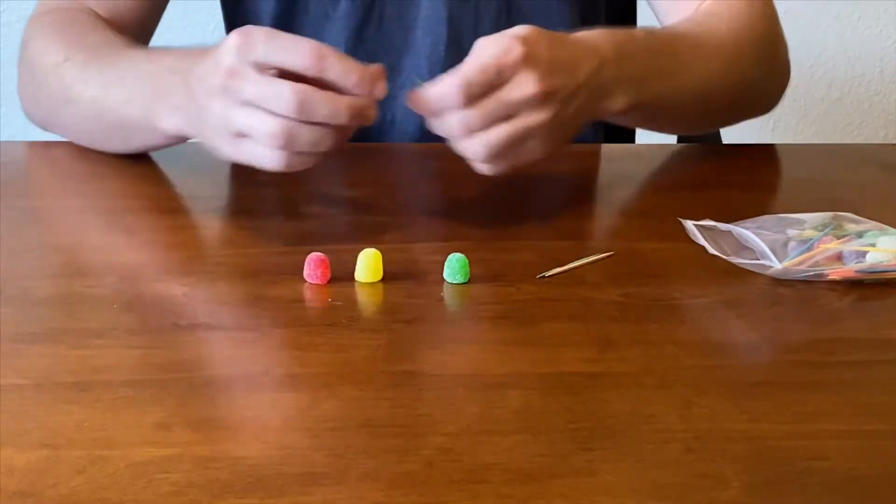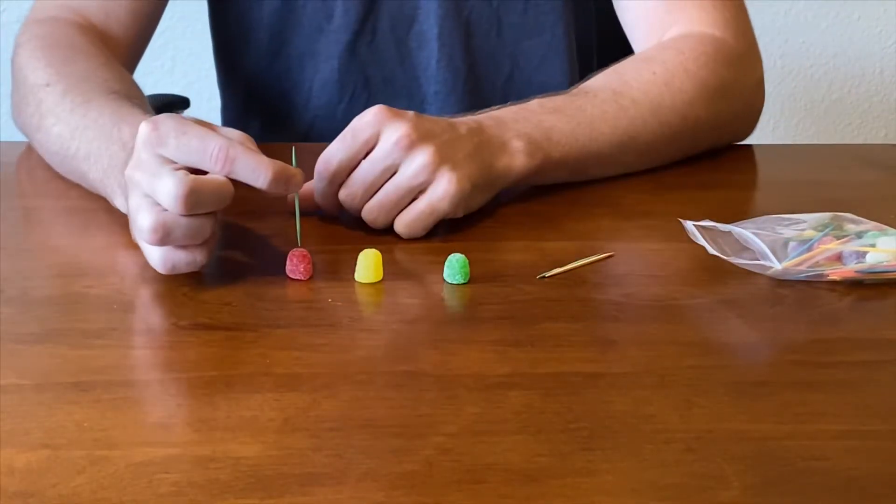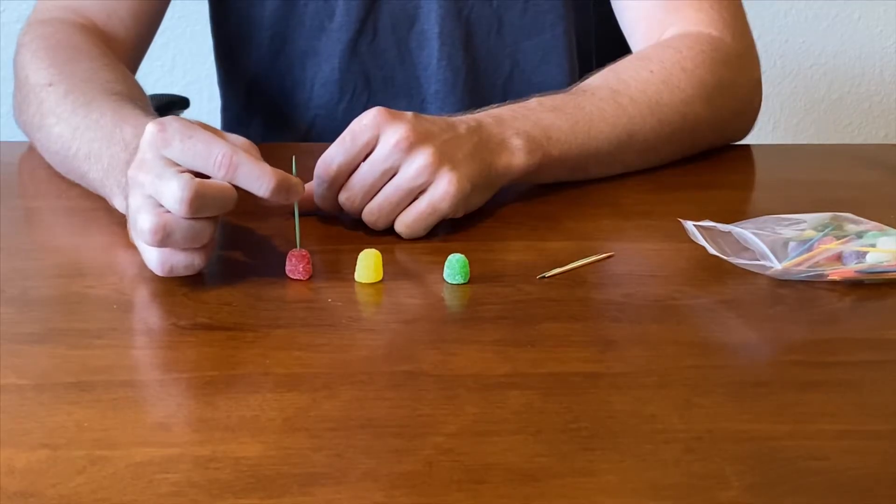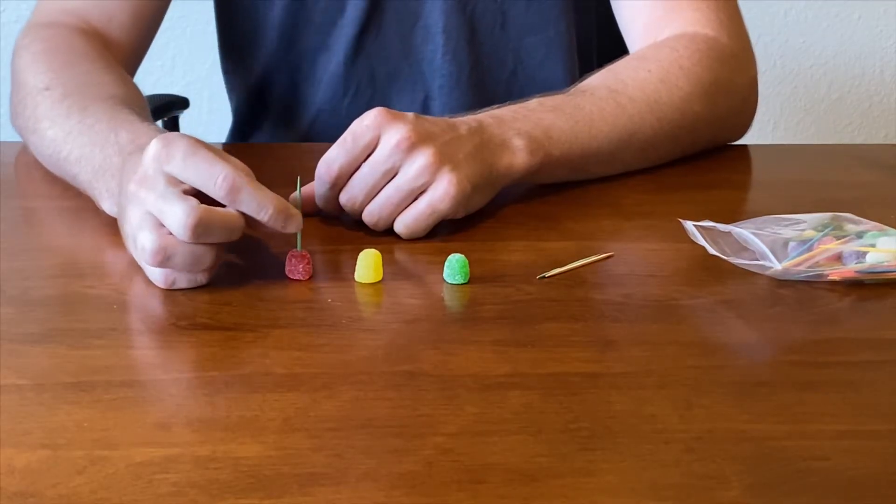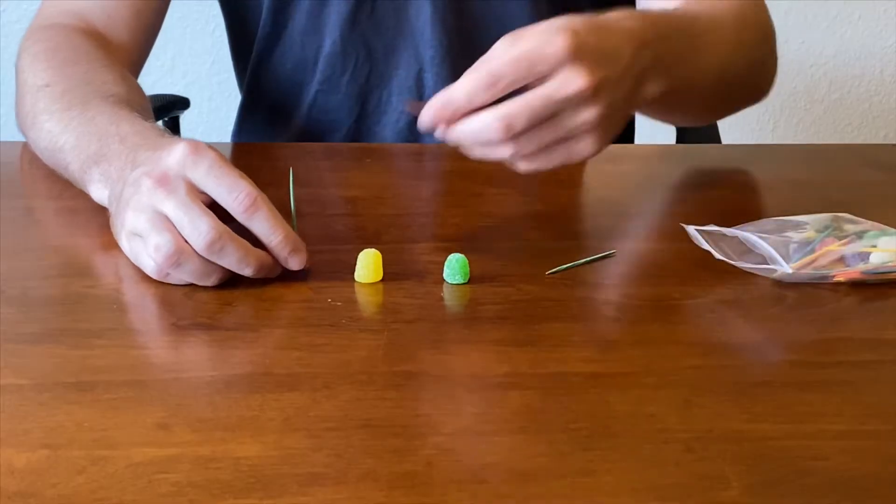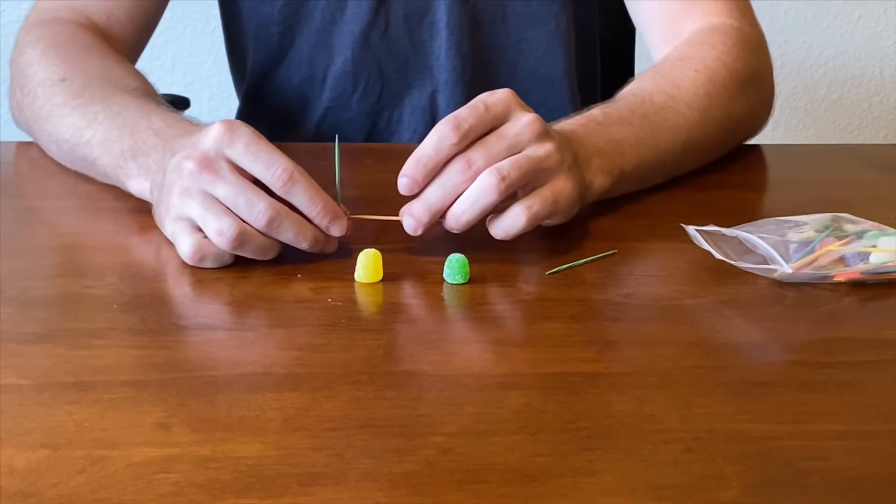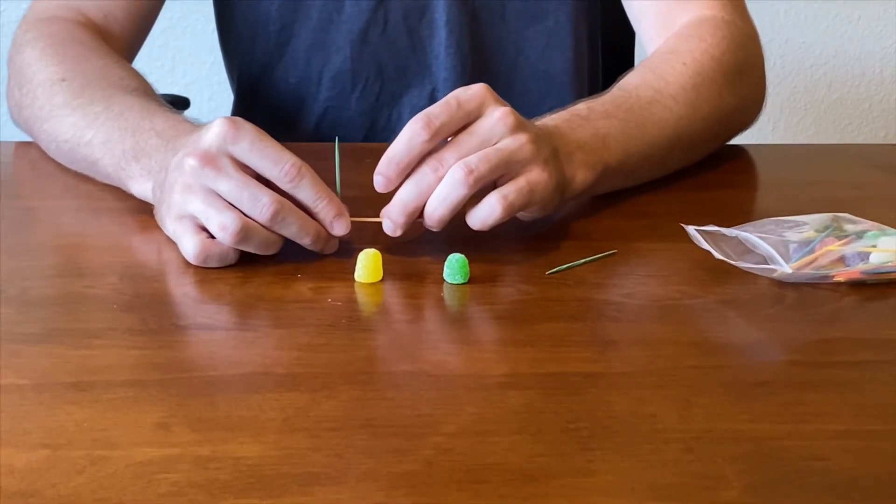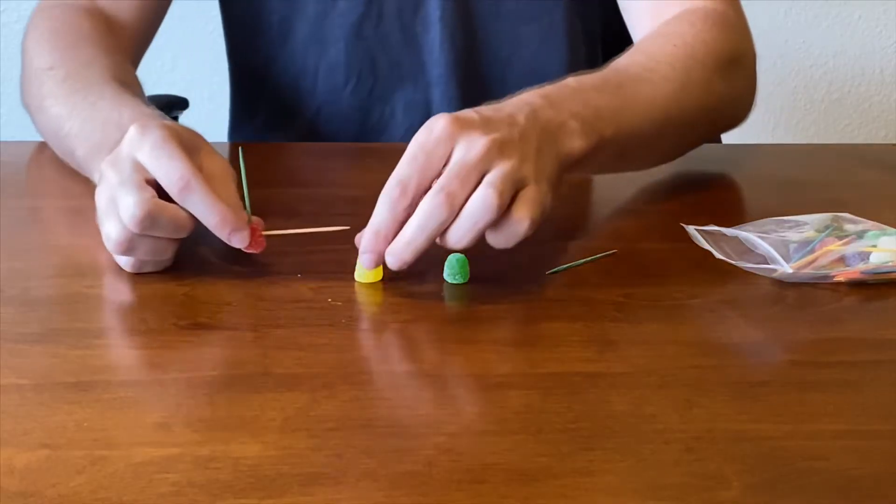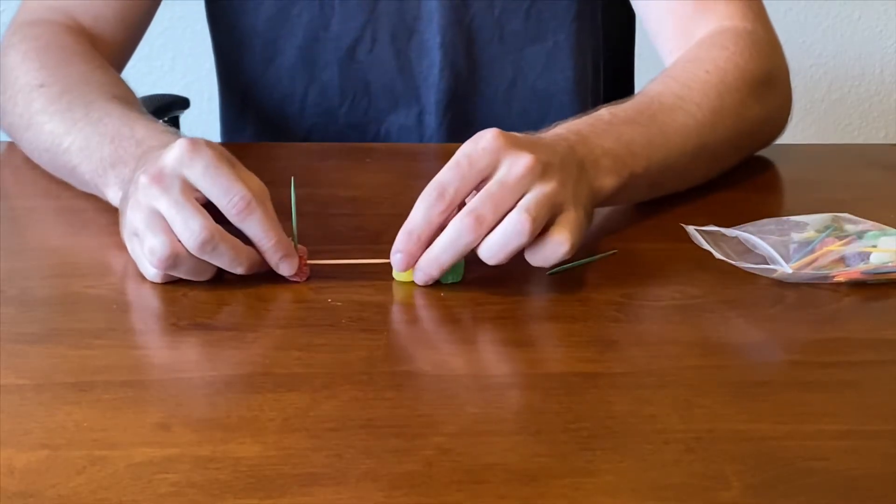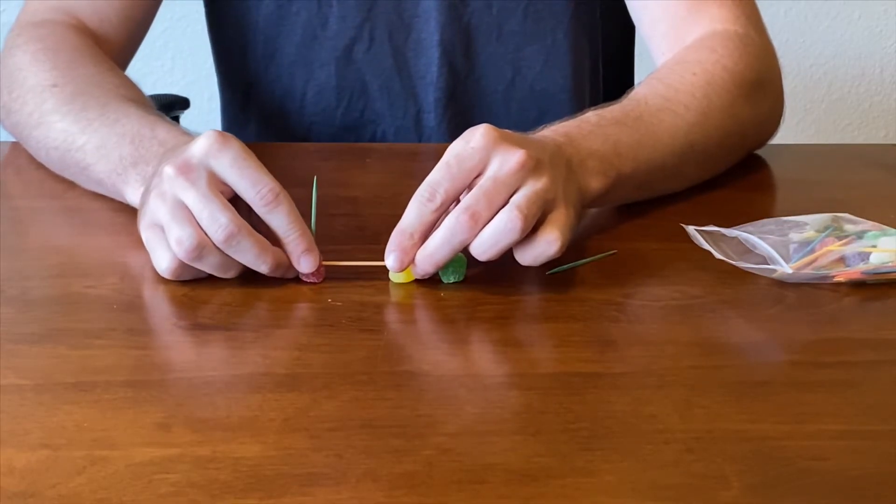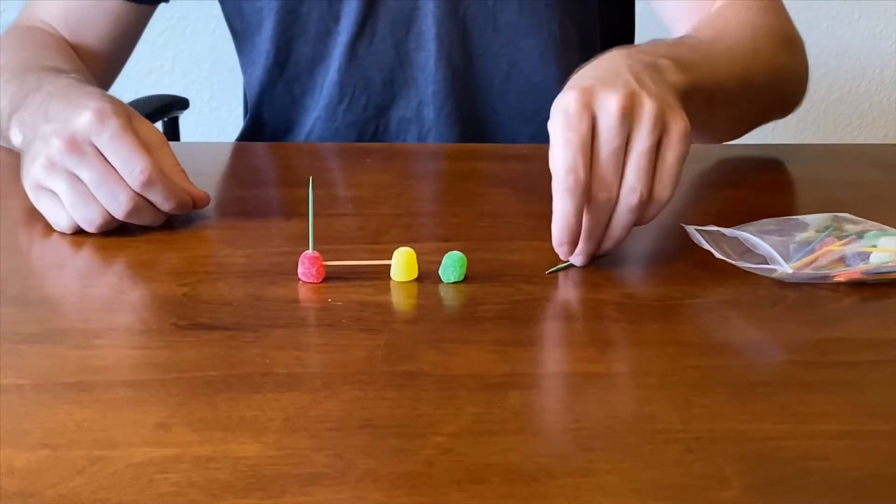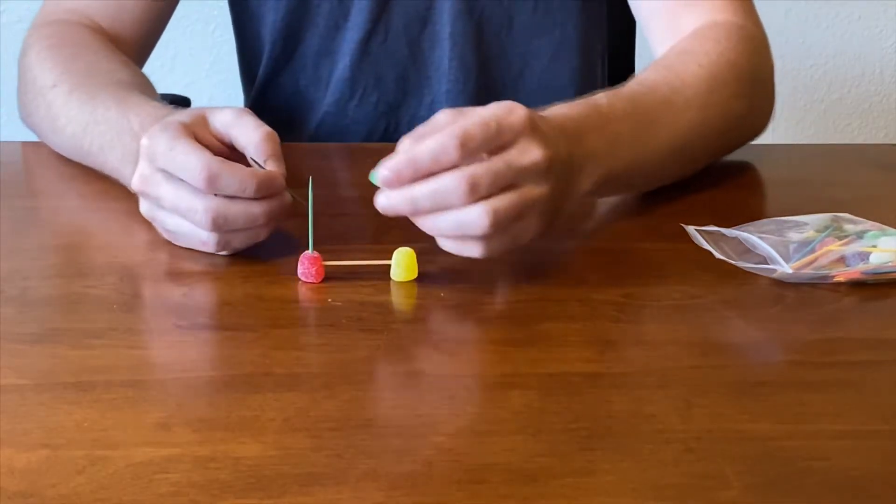It's really simple. Just like this, put your toothpick right in the center of one gumdrop. And now you're gonna grab another gumdrop, just like that.